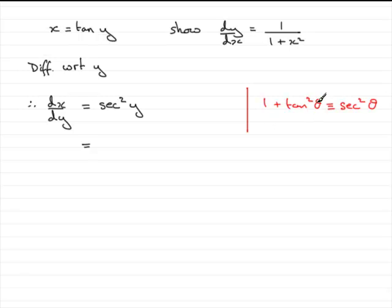That angle that we're using is not theta but y. So we've got 1 plus tan squared y. Now we know what tan y is. Tan y is x. So we can write this as 1 plus x squared.